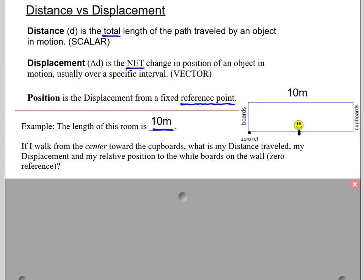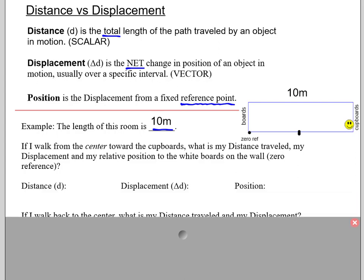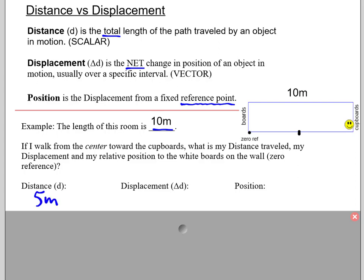If you'd imagine being in the classroom, we have the whiteboards out front, we have the cupboards in the back, and I'll say I'm standing in the middle, I'll be the little smiley face. So if I walk from the center toward the cupboards, what is my distance traveled, my displacement, and my relative position to the whiteboards on the wall? Let's take a look. So the distance traveled would be 5 meters. My displacement would be 5 meters to the right. And then my position, if my zero reference is the whiteboards, my position is 10 meters to the right.